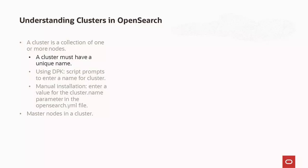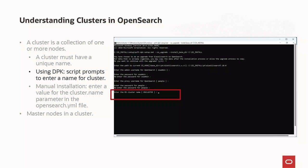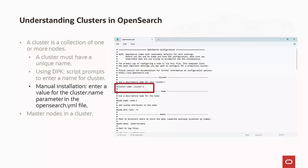For example, you could use logging-dev, logging-stage, and logging-prod for the development, staging, and production clusters. When you install OpenSearch using DPK, the script prompts for the name of the cluster. If you're installing OpenSearch manually, you need to specify the cluster name in the cluster.name parameter in the OpenSearch.yml file.